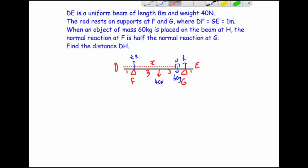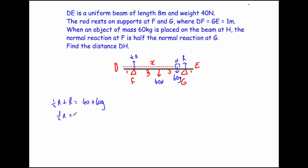Since the rod is in equilibrium, forces up equal forces down. The forces upward are half R plus R, which equals three-halves R. The forces downward are 40 newtons plus 60G. Working that out: 40 plus 60 times 9.8 equals 628 newtons.